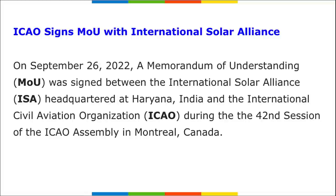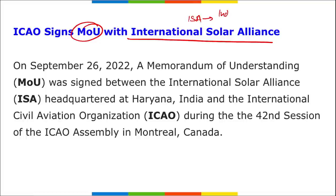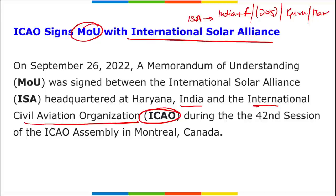ICAO (International Civil Aviation Organization) recently signed an MOU with ISA (International Solar Alliance). The ISA was a project between India and France, launched in 2015, with its headquarters in Gurugram, Haryana.